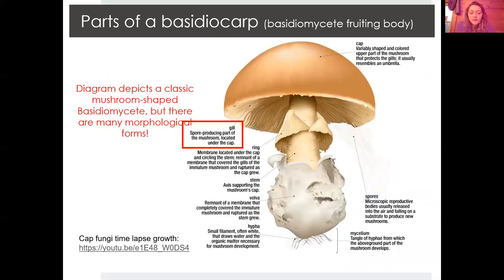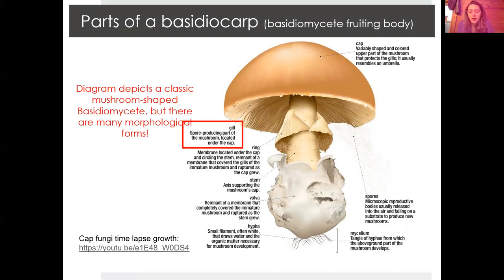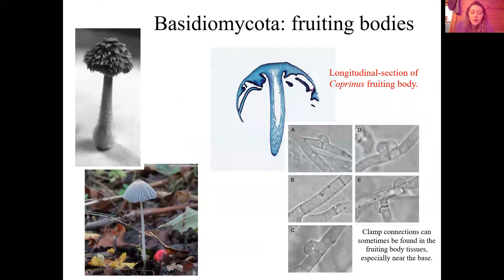The components of a basidiocarp: this is just a classic mushroom shape. The cap, mycelium, hyphae, volva, stem, and ring are all really important parts — if you wanted to do field ID of fungi you'd need to be comfortable with all these. We're going to focus on the gills, which is where spores are produced, located under the cap. There's a time-lapse video of a cap fungus growing, and on the underside you'll see the gills, where the hymenium is located.